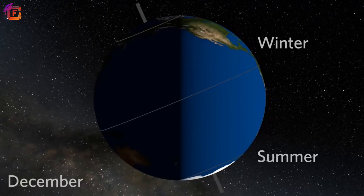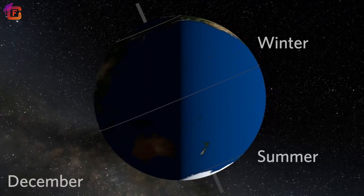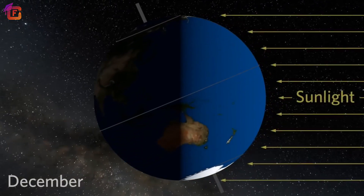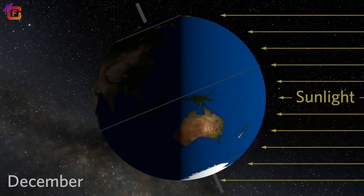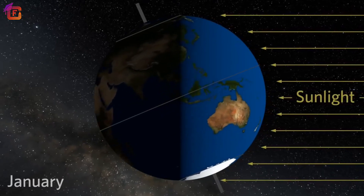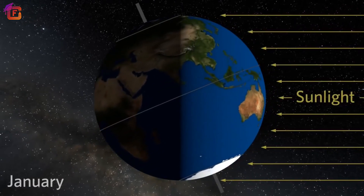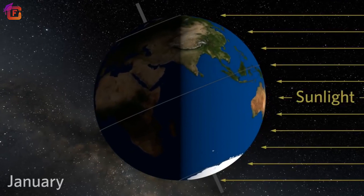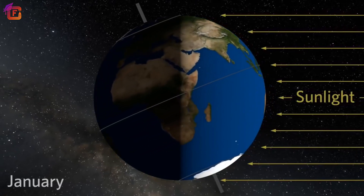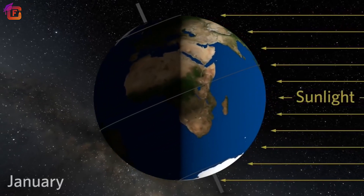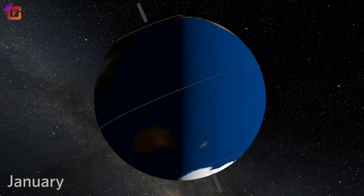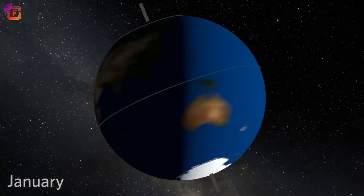The frigid zone receives slanting rays of the sun because this region lies farthest from the equator. There is almost 24 hours of sunlight during the summer season, which lasts for about two to three months in the areas of the frigid zone.